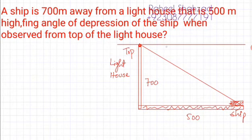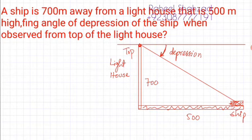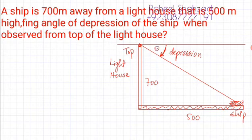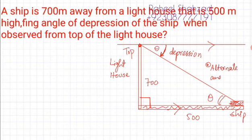A very important concept: angle of depression is always measured from the parallel line. This angle here is the angle of depression that we require. Some students make the mistake of measuring from the wrong line. The angle you make with your level when observing a point below is the angle of depression. This is theta. Since the two horizontal lines are parallel, this theta equals the alternate interior angle, because alternate angles are equal.